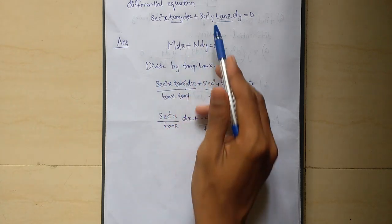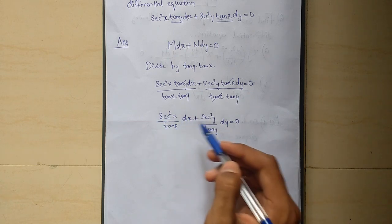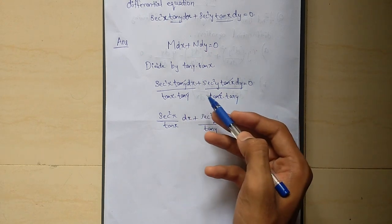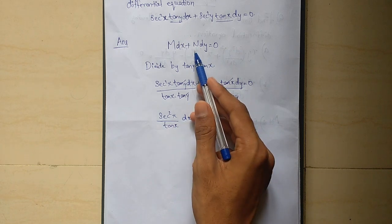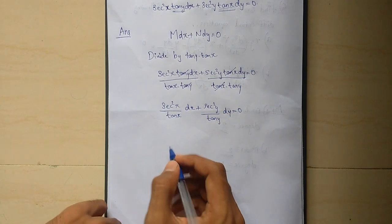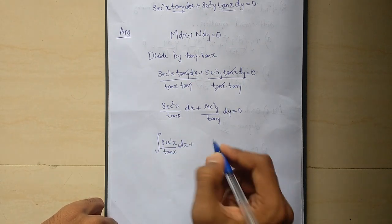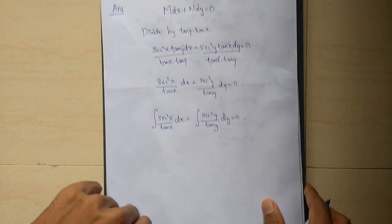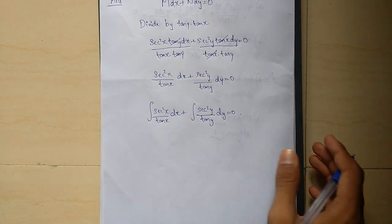Now friends, we will solve this equation. We answer dx and dy. We will divide: if we have tan y and tan x, we set up the form mdx plus ndy equal to 0. We directly integrate: integral of cosec squared x by tan x dx, plus integral of cosec squared y by tan y dy, equals 0.